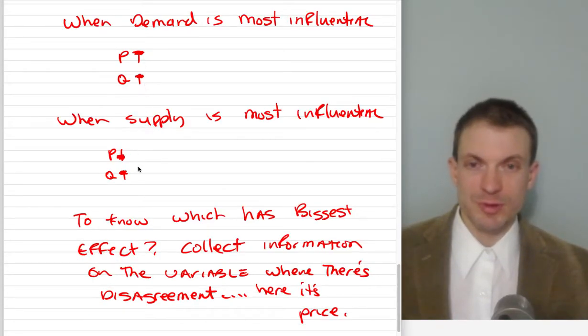When demand is most influential, price and quantity rise. When supply is most influential, we see price falling and quantity rising. We see that from our picture.